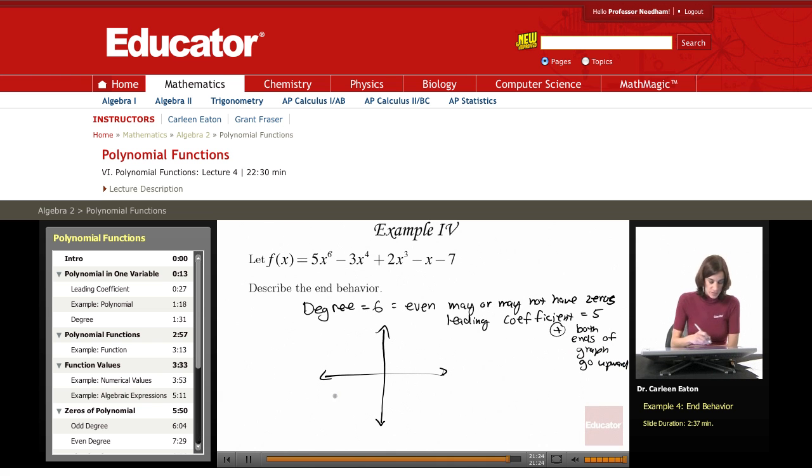So this is to the 6, so it's going to be more complex, but just schematically, the idea is that it may or may not have zeros, the idea is that both ends will face up.